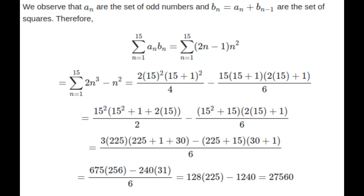Therefore, the expression sum from n equals 1 to 15 of aₙbₙ equals sum from n equals 1 to 15 of (2n - 1)n². Here 2n - 1 represents the odd numbers and n² represents the squares.